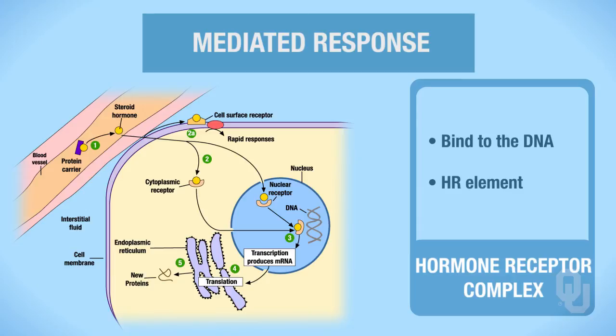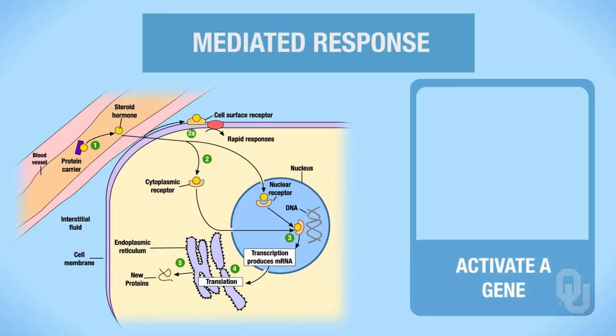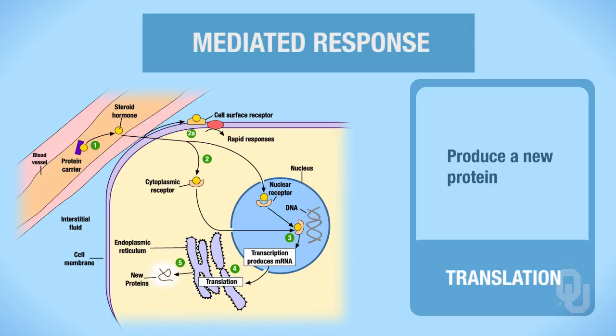In most cases, that's going to activate a gene. And we know if a gene is activated, then transcription can take place, which produces your messenger RNA, which travels into the cytoplasm, and then translation can take place. We know that the end result of translation is to produce a new protein. This is an example of when we activate a gene and that produces a protein.